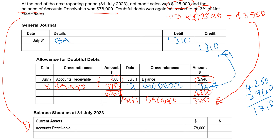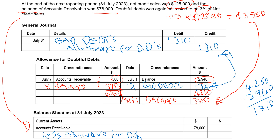So we're going to debit bad debts $1,310, and credit allowance for doubtful debts $1,310 — and that's the same process as we did back in step one. Then in our balance sheet, just as we did in step one, be careful because we don't put the $1,310 figure here — we put the 3% of net credit sales, which is $3,750. So $3,750 subtracted from $78k leaves us with $74,250 net accounts receivable.